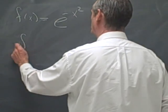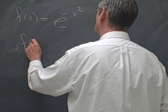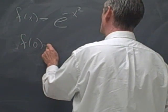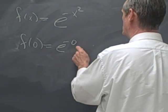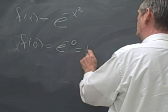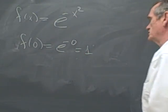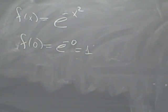First, let's compute the value at 0. f(0) is going to be e to the minus 0 power, so that's going to be 1. The value of the function at 0 is 1.